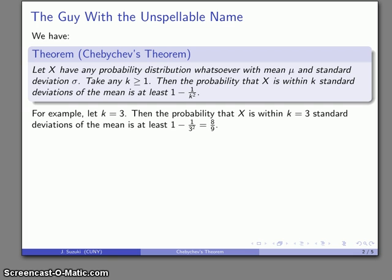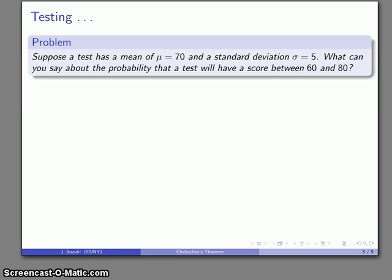Well, again, the example doesn't necessarily help us too much, so let's try and apply it to an actual situation. Imagine that I have some sort of test, and the test has a mean of 70 and a standard deviation of 5. We calculate or find those using whatever means we have. And what can we say about the probability that a given test will have a score between, say, 60 and 80?